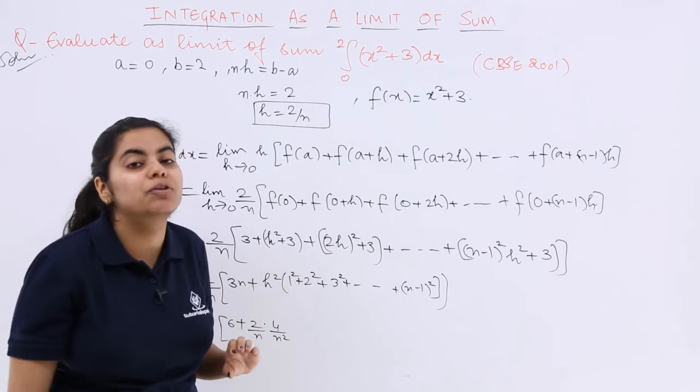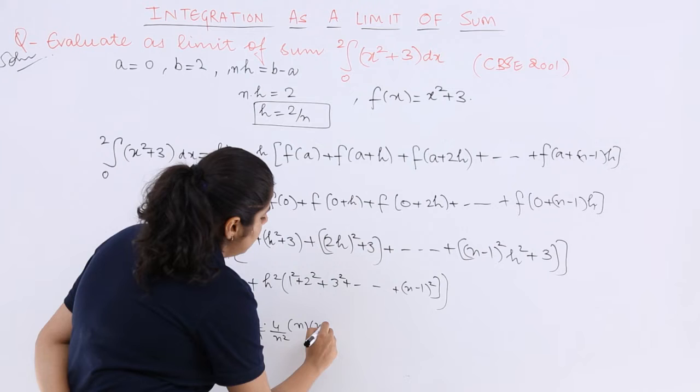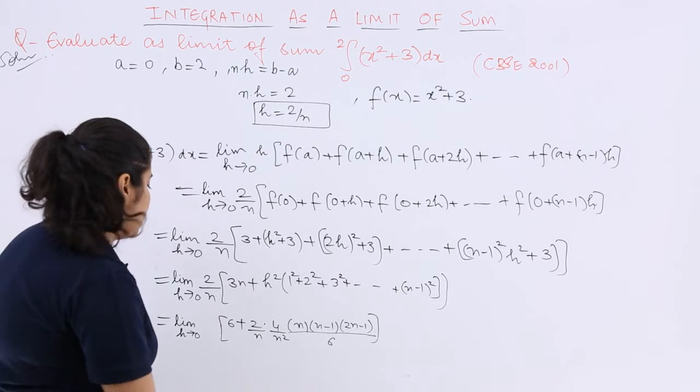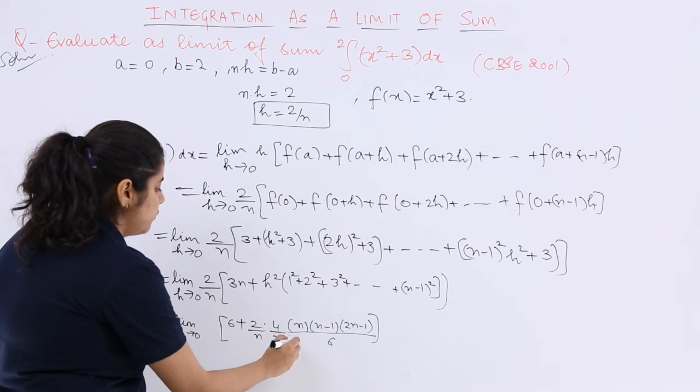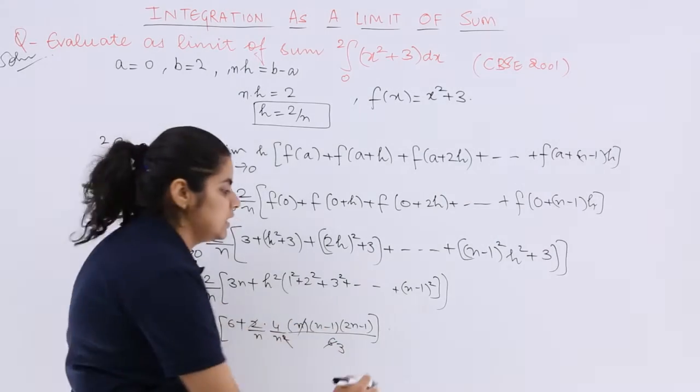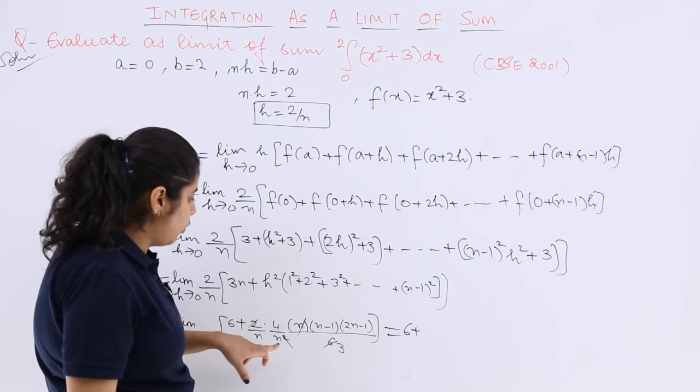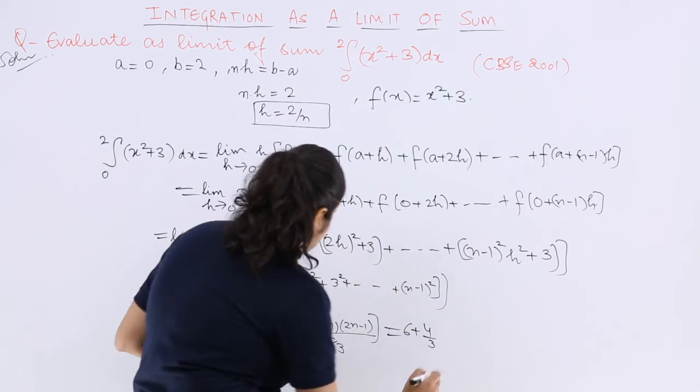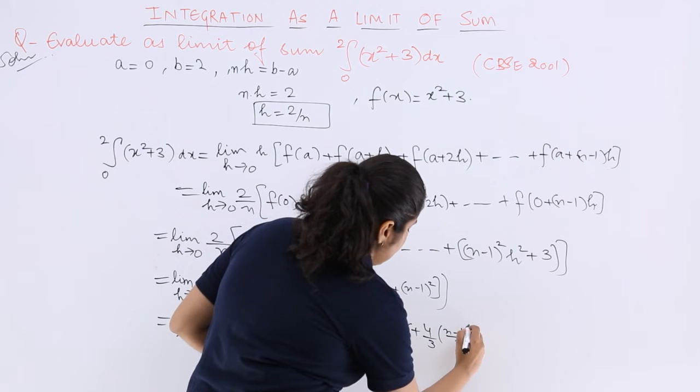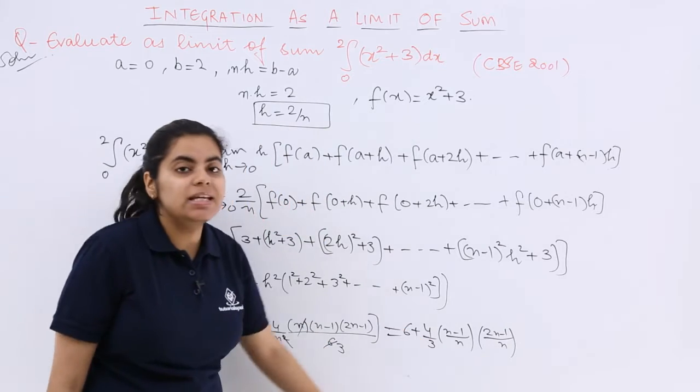Then inside you have to apply the formula 1 square, 2 square till N minus 1 whole square, which is N times N minus 1 times 2N minus 1 whole over 6. Now cancel certain things. I have N getting cancelled with N, I have 2 getting cancelled here. For the further part, it is 6 plus 4 upon 3, and these N and N go to the other side here. So it is N minus 1 upon N multiplied by 2N minus 1 upon N, and N tends to infinity.